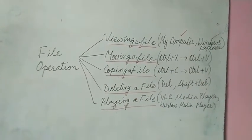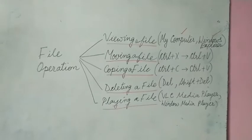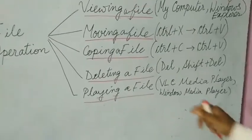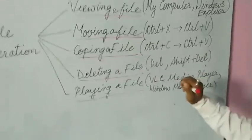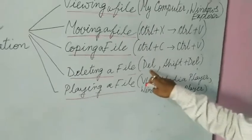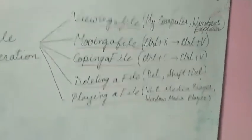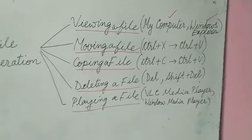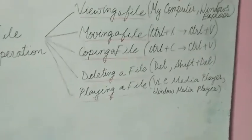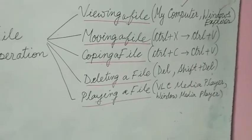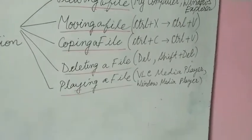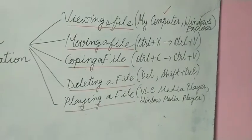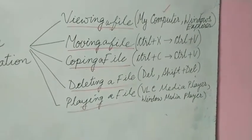Deleting a file is used to remove it so that you cannot access it anymore. You can delete a file either by using the Del key, or using Shift+Del to remove the file permanently. Playing a file means playing any audio file or video file — you want to listen to songs or watch a movie.